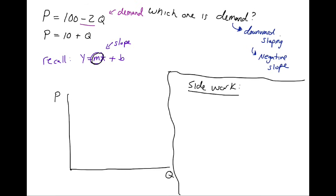Alright so we need a little bit of side work to actually figure out how to graph these. So we're going to start with the demand equation. Remember the demand equation is simply just P equals 100 minus 2Q. And so how do we graph this?